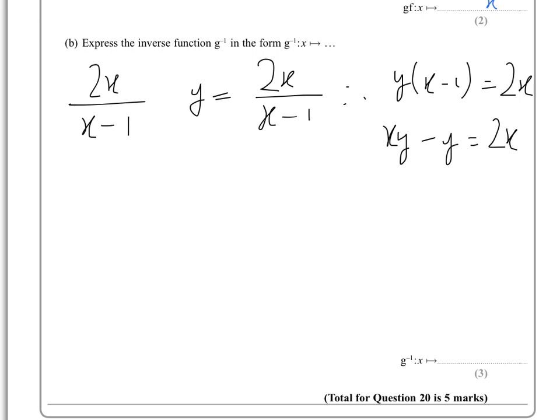What you're going to end up with is y equals xy minus 2x. Now, we're rearranging for x, so what we do now is we factorize those.